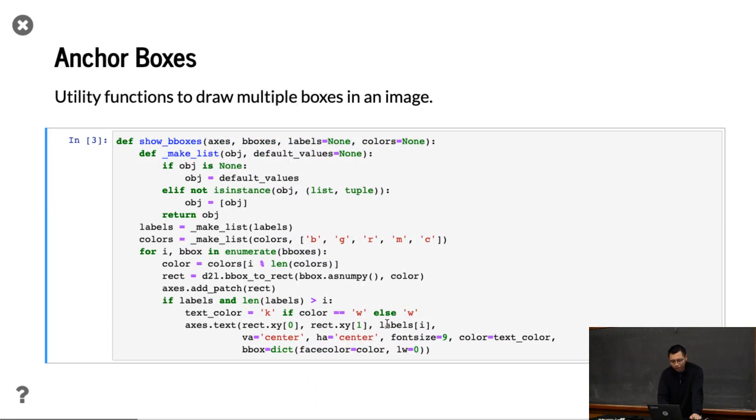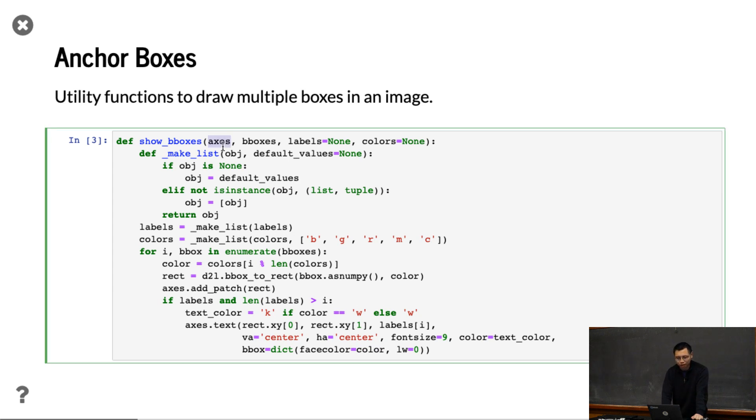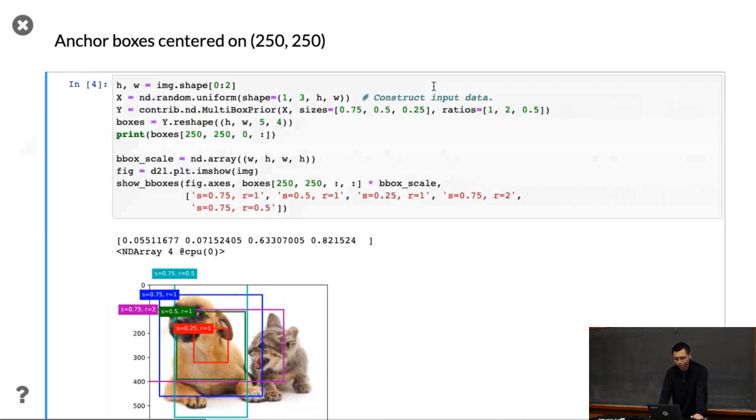And then another function to show multiple boxes. I'm going to skip other things. This is just to plot multiple bounding boxes - the only thing is the fig and the list of bounding boxes, if you have labels or not, and you want to pick up the color.